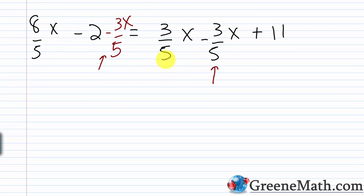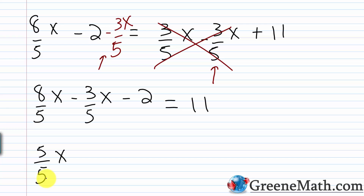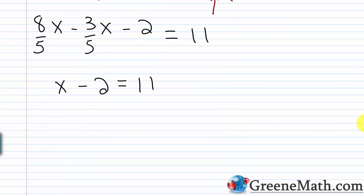On the right side I now just have 11. On the left side I have 8 fifths x minus 3 fifths x minus 2, with a common denominator of 5. 8x minus 3x — working with numerators, 8 minus 3 is 5 — gives 5 fifths x. Since 5 over 5 is 1, I have 1x, or just x. So I have x minus 2 equals 11. What started out looking extremely complicated turned into something solvable with a simple property. Watch for problems like this — simplify, and move all variable terms to one side first.